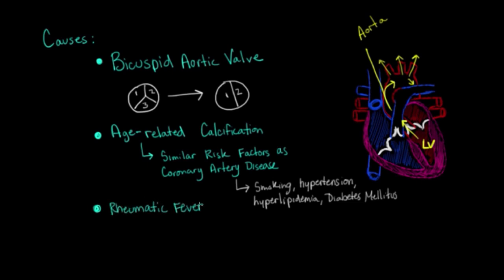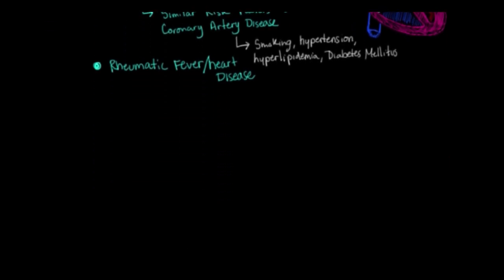Another cause of aortic stenosis could be rheumatic fever. Now, generally, the mitral valve is more commonly affected, but the disease process of rheumatic fever and rheumatic heart disease can actually affect the aortic valve as well.